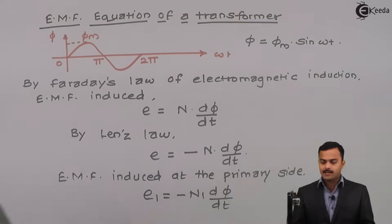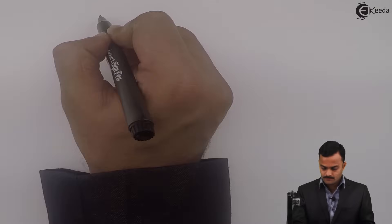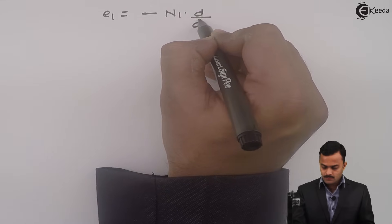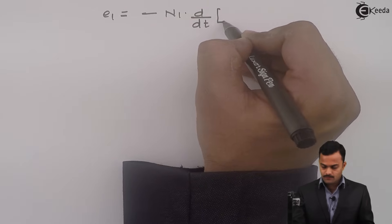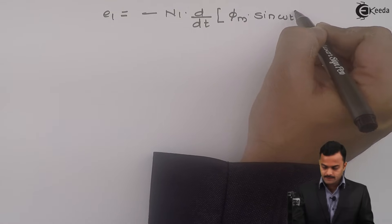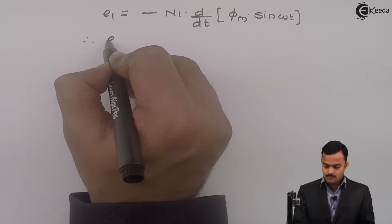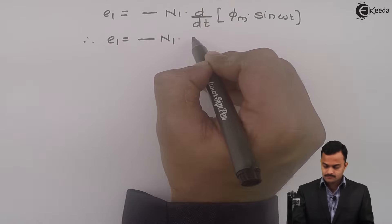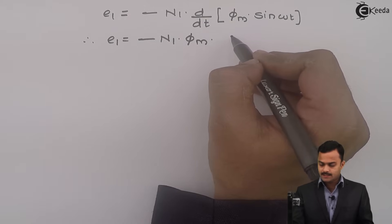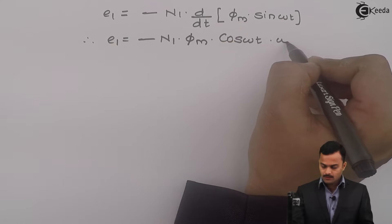Let's substitute phi equal to phi m sine omega t over here. I will get E1 equal to minus n1 d by dt of phi m sine omega t. If I take a derivative, I will get minus n1 phi m is a constant, sine omega t derivative is cos omega t multiplied by omega.